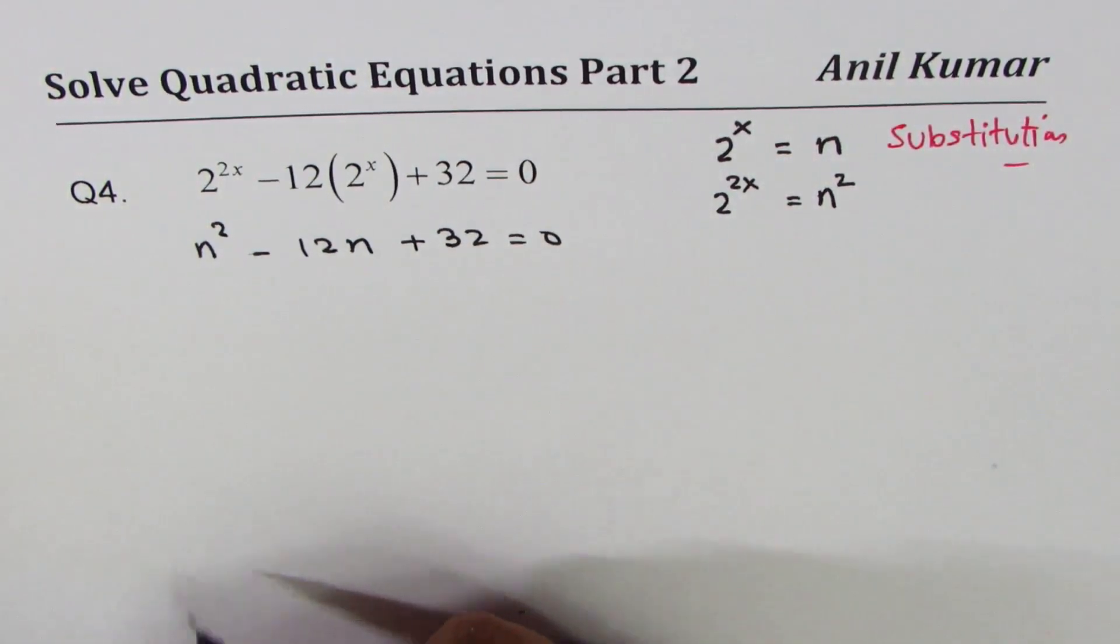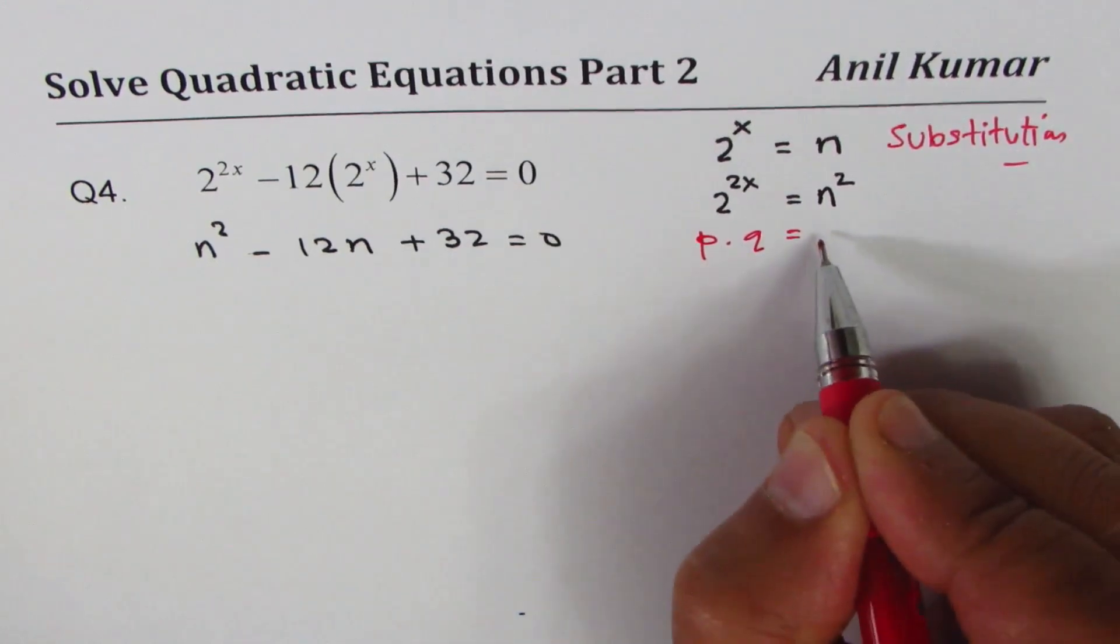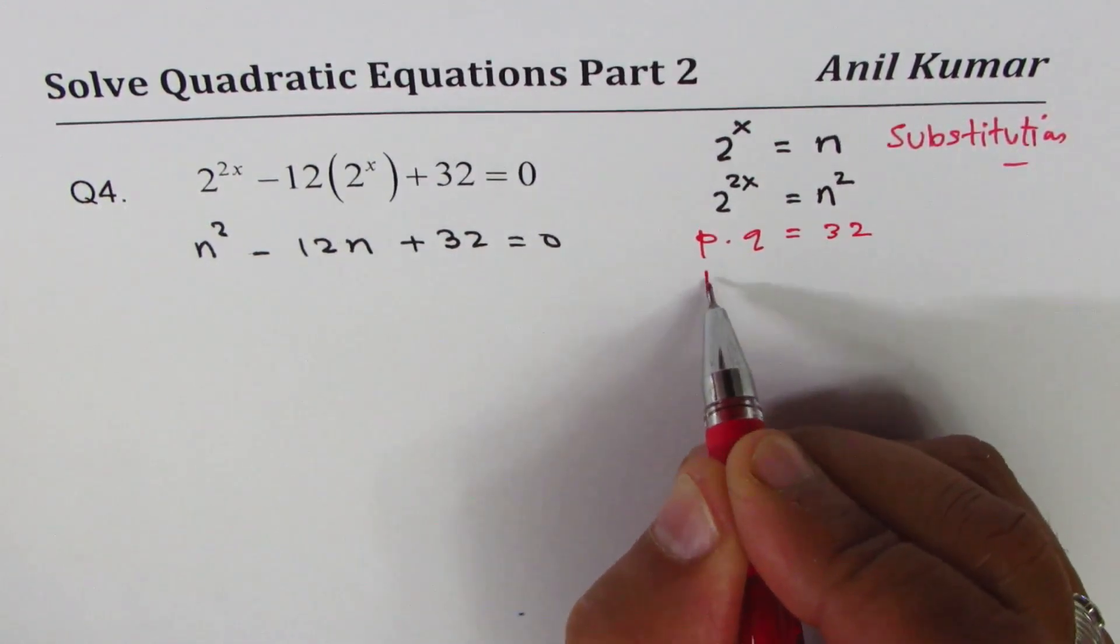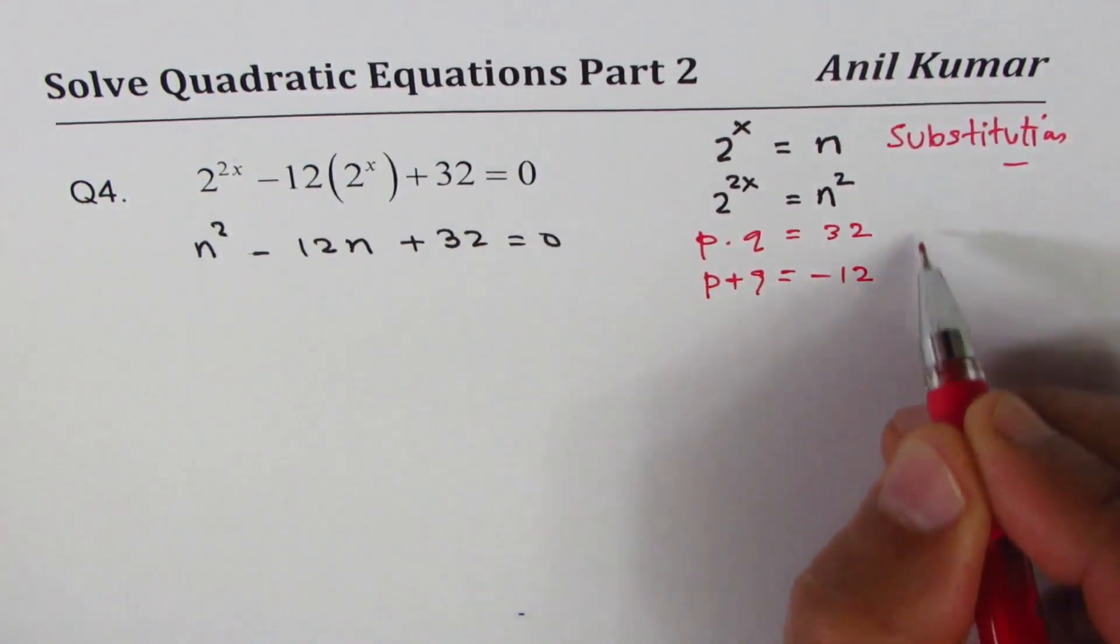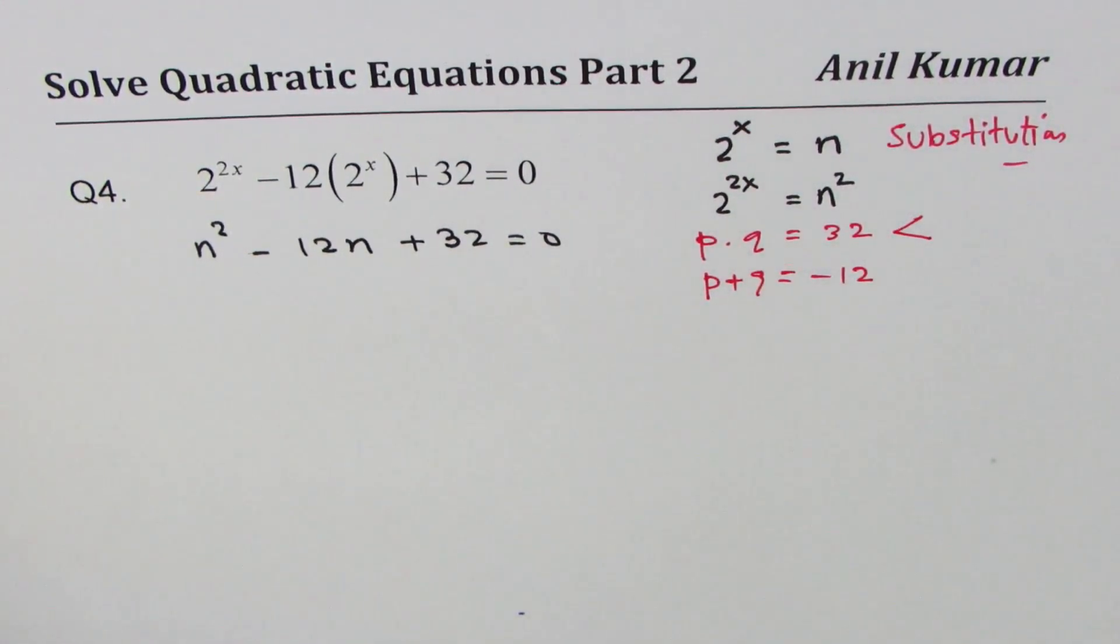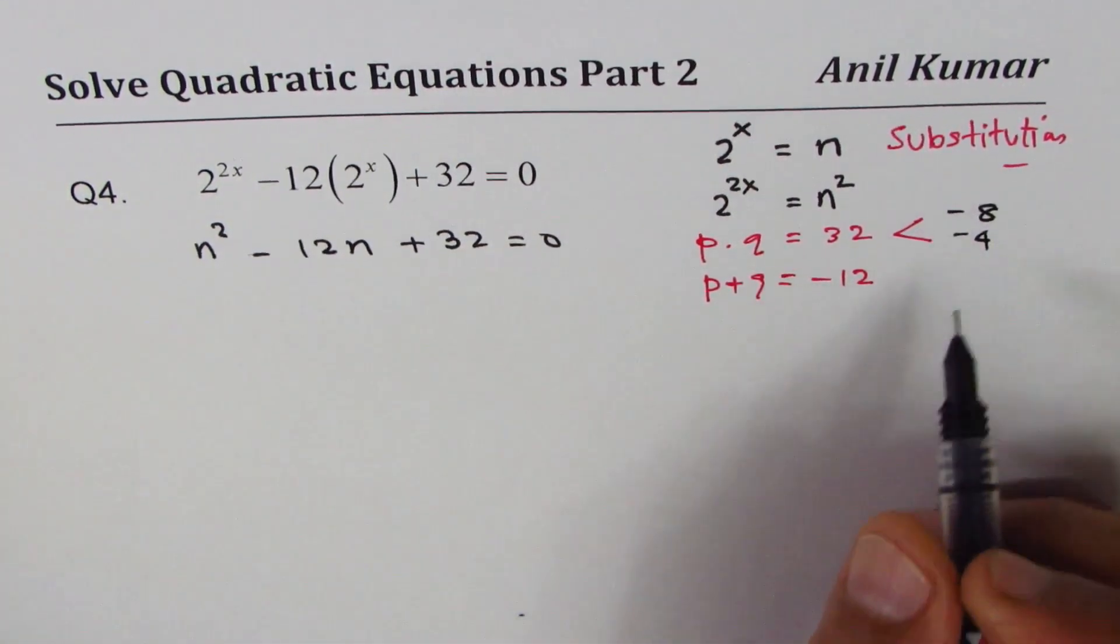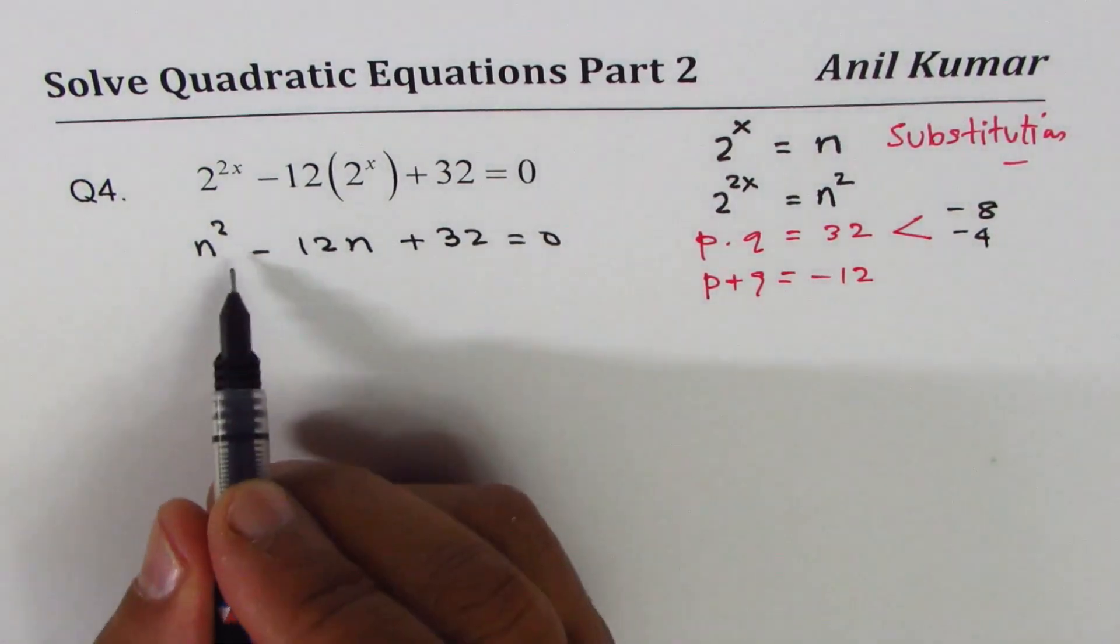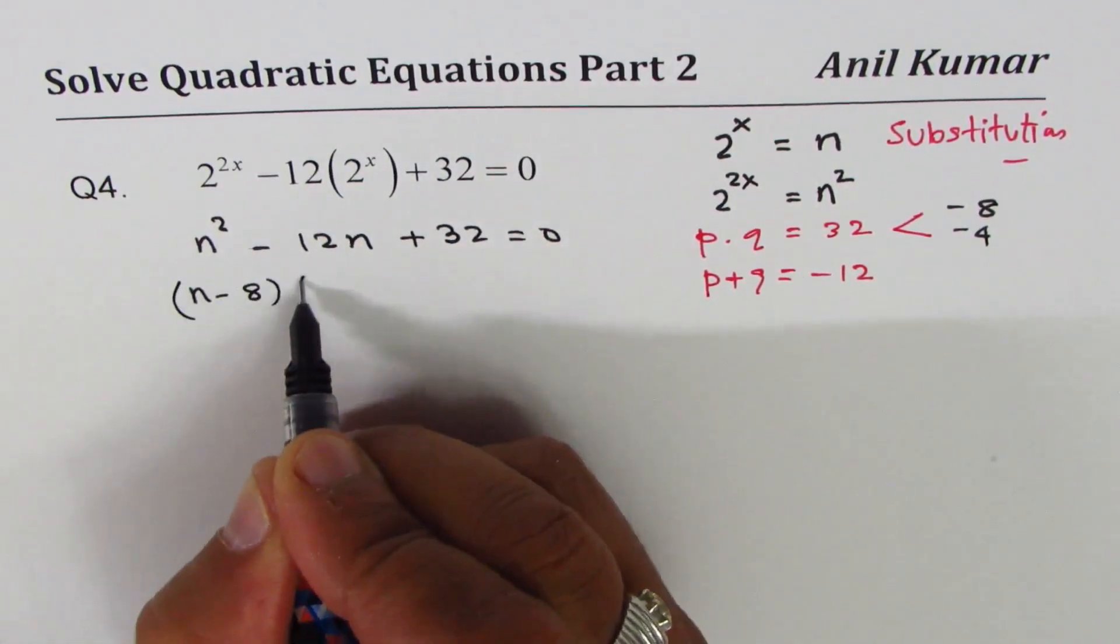Now it is simple to solve. We are looking for two numbers whose product could be 32. Let the two numbers be p and q, and their sum be minus 12. Those numbers could be what? How do you get product of 32, sum of minus 12? 8 times 4. So minus 8 and minus 4 are the two numbers. So we could factor this as n minus 8 times n minus 4 equal to 0.